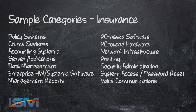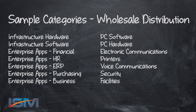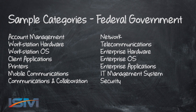Looking across industry at some sample category models, you'll see a number of very distinct differences based on industry, but also striking similarities. You see things like enterprise systems, PC or desktop hardware and desktop software. There are a few outliers, such as system access and password reset. Looking at wholesale distribution you see financial, HR, ERP, and purchasing. In federal government you see client applications, workstation hardware, and workstation OS — very similar in a lot of ways.